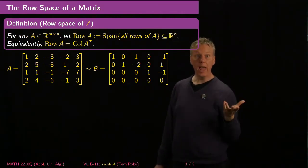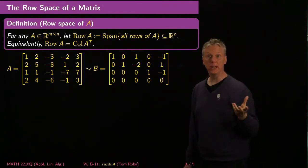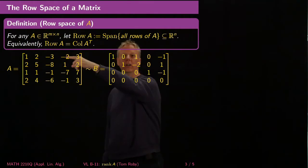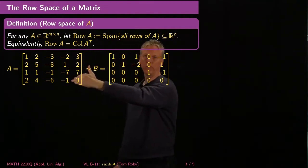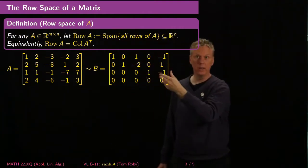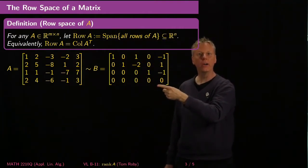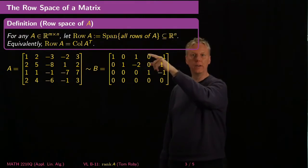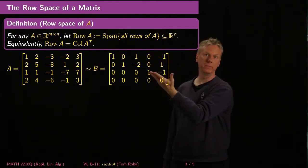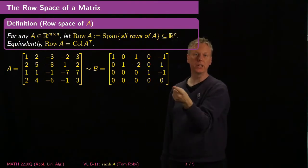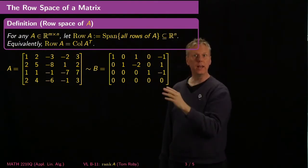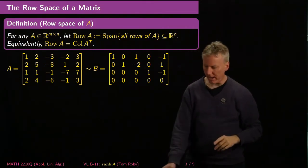This makes life really easy because I can say the row space of A is a span of four vectors, but maybe there are some linear dependencies — and in fact, looking at B, I can tell there are. The dimension of the row space is exactly three, because the zero vector doesn't contribute anything. So I've got these three vectors, and I claim that it's clear they're linearly independent.